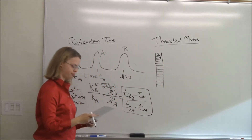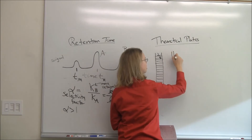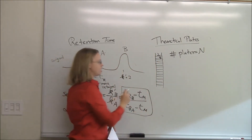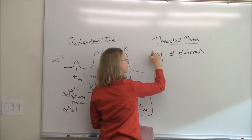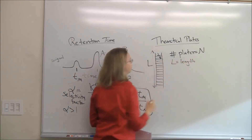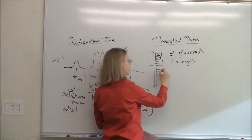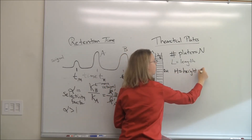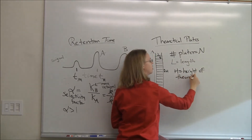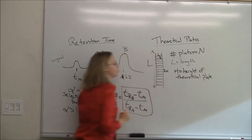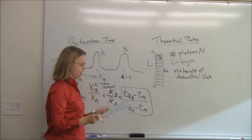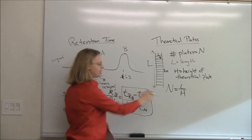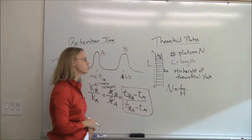The question is how many plates you have in your column. We use big N for the number of theoretical plates. The length of the column is L — say a 20 centimeter column — and how big each little plate would be is H, the height of a theoretical plate. So we define big N as L over H. That makes N dimensionless, with L and H both in units of distance like centimeters.